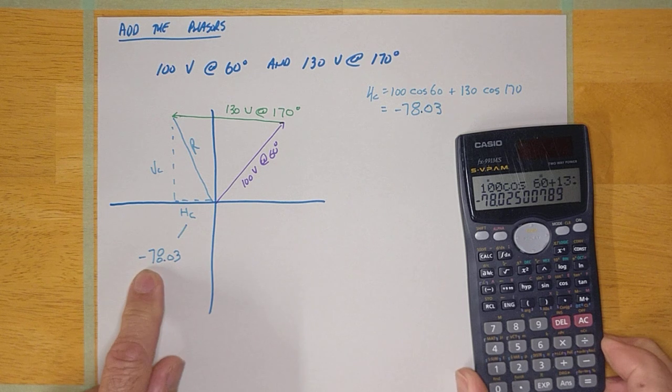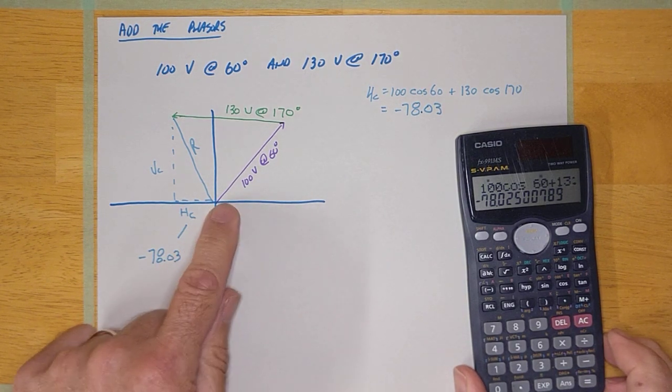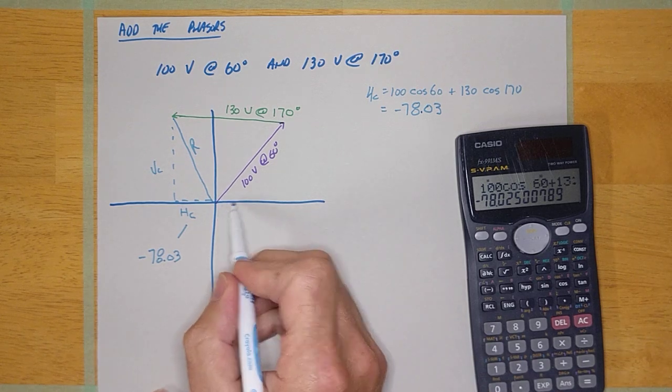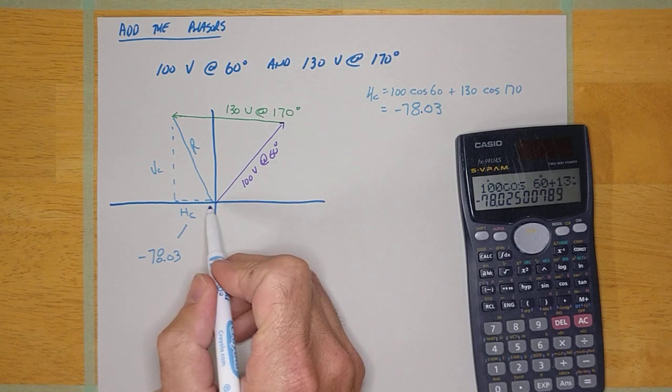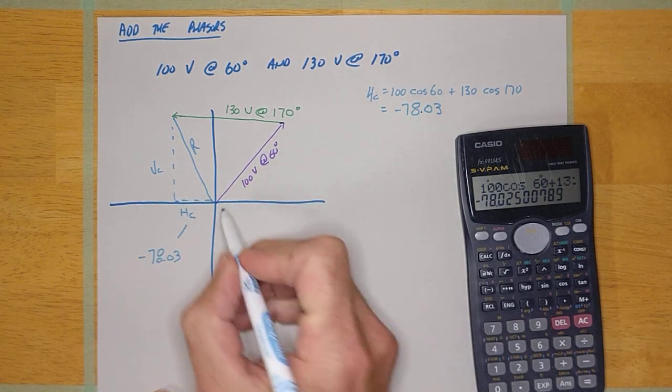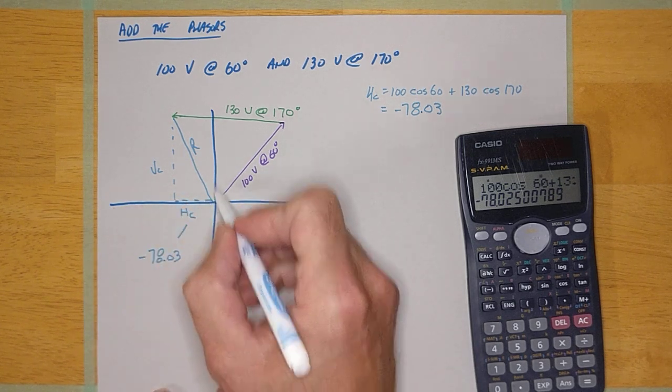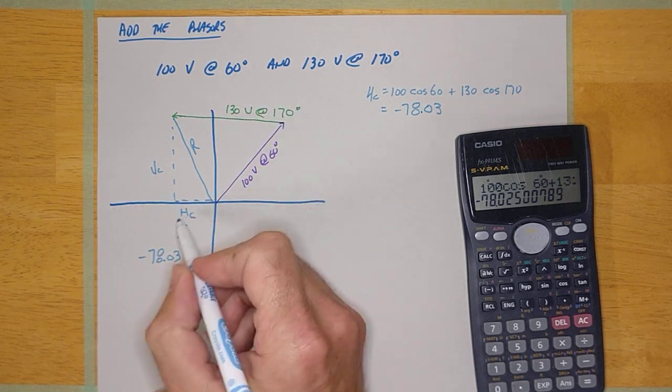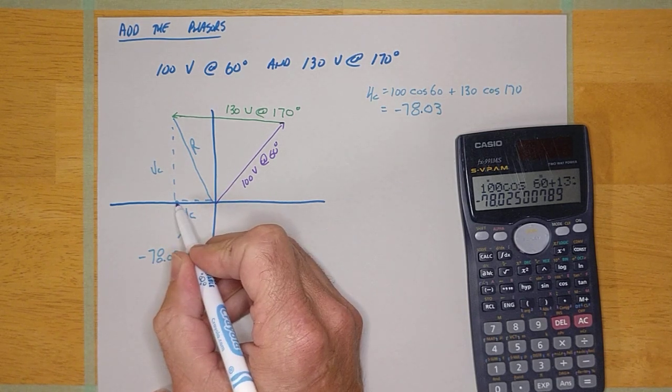100 cos 60 plus 130 cos 170 equals minus 78.03. If I want to get fussy, there it is minus 78.03. Now I want you to notice that the number is negative. And the number is negative because it's over here. Because positive numbers are always going to be out this way. Positive numbers will be up. Negative numbers will be over here to the left. Negative numbers down. So the fact that that came out negative is perfect.